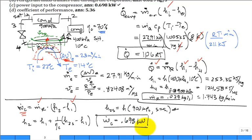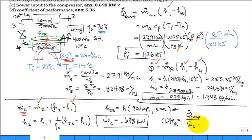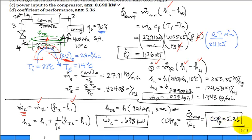Finally, the coefficient of performance: COP equals what we desire — the Q_dot in the evaporator — divided by the power to run the compressor. The refrigeration capacity is 1.06 refrigerant tons, which you convert to kilowatts, then divide by the compressor power. The COP comes out to 5.36.